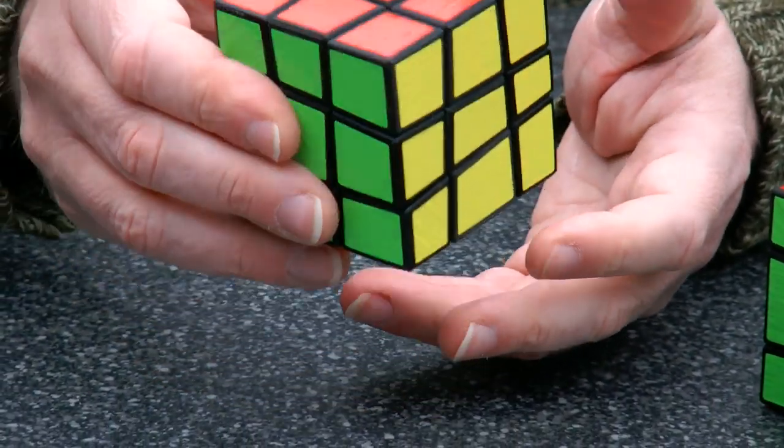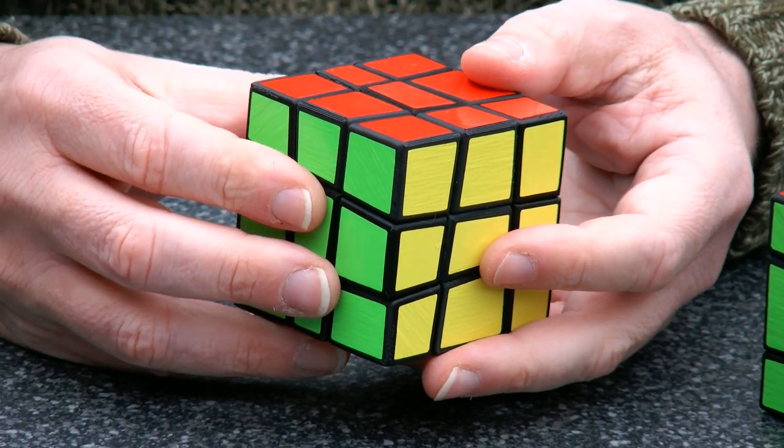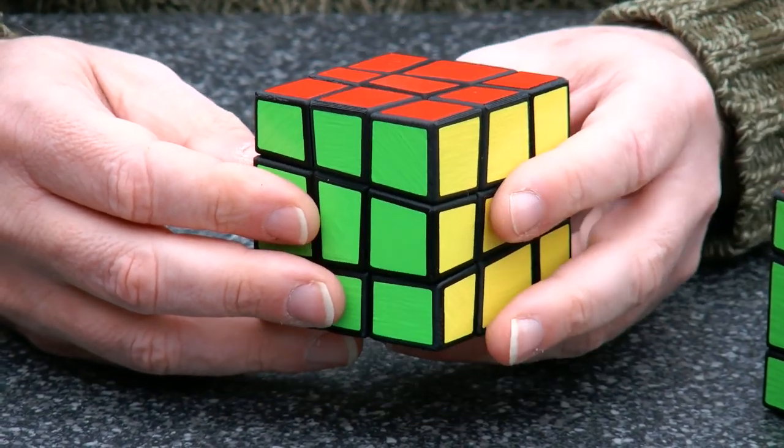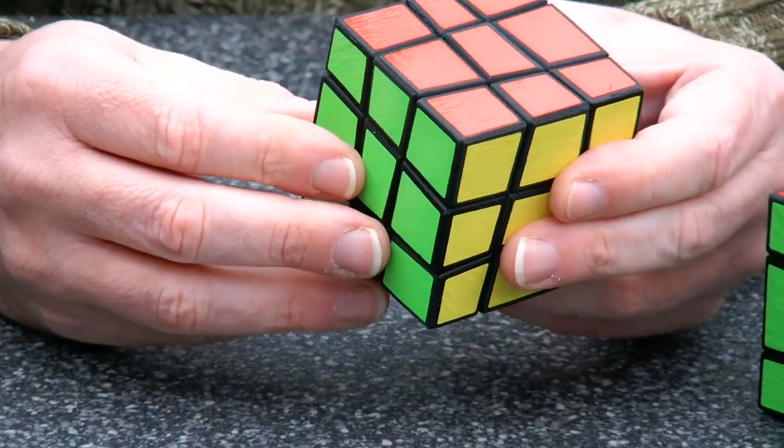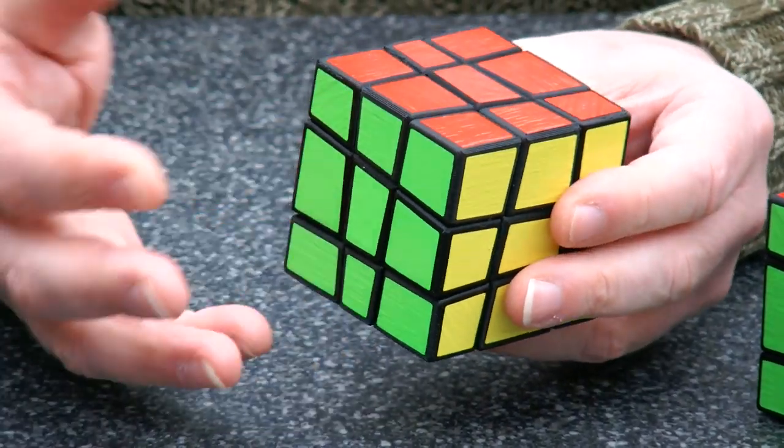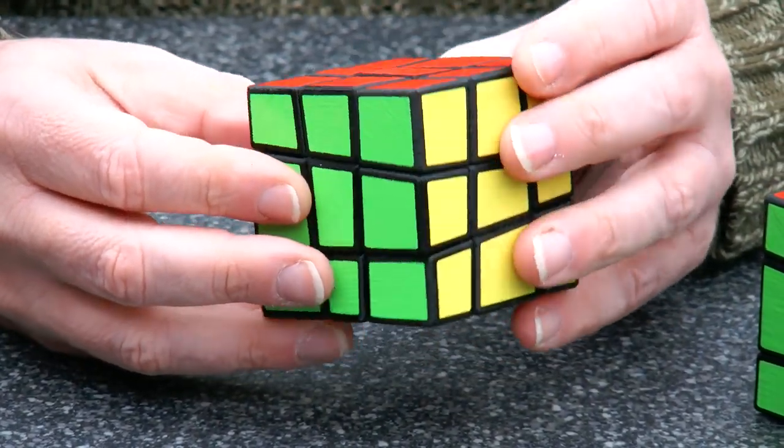If you give it to a friend, your friend will probably not be able to scramble it. And of course once scrambled, almost nobody can solve it. It's really hard to scramble and extremely hard to solve.